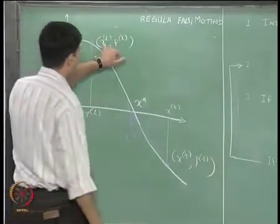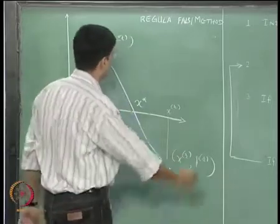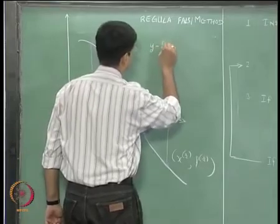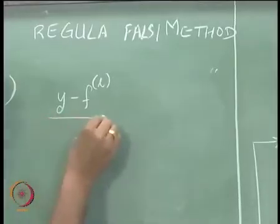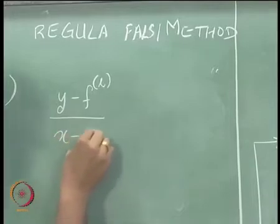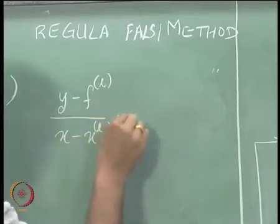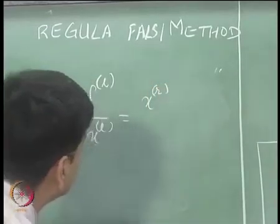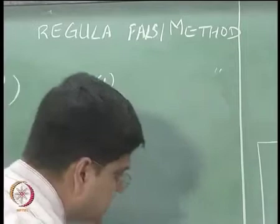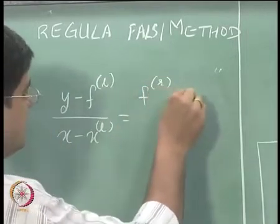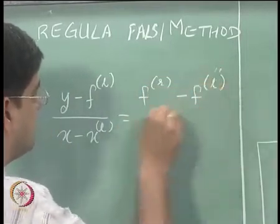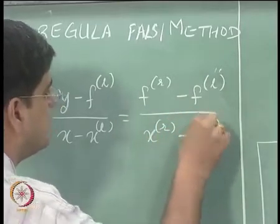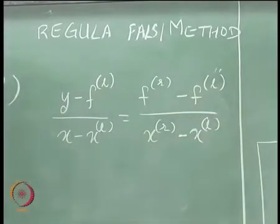The line connecting (x_l, f_l) with (x_r, f_r) can be written as: y minus f_l divided by x minus x_l is going to be equal to f_r minus f_l divided by x_r minus x_l.